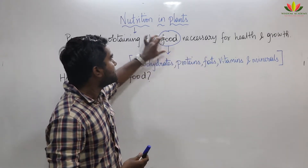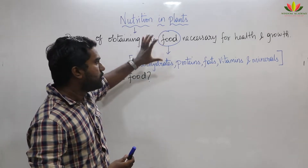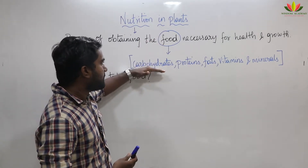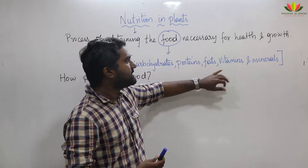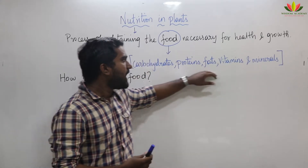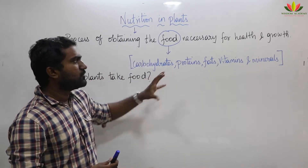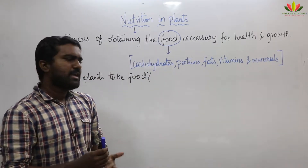What is there in the food? Food contains carbohydrates, proteins, fats, vitamins and minerals — these five elements are in the food.